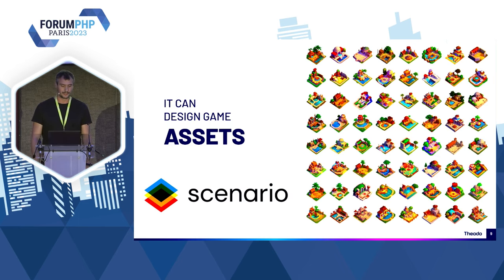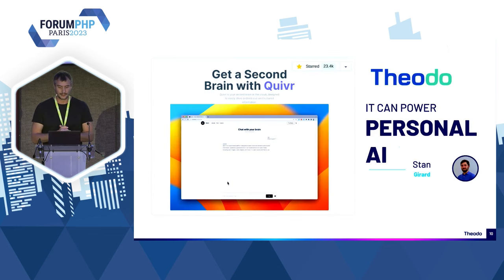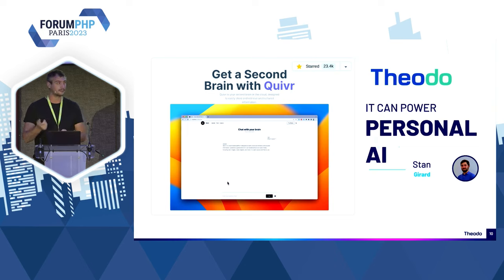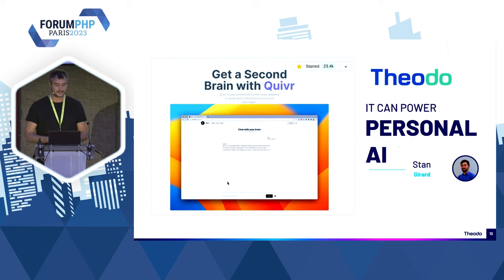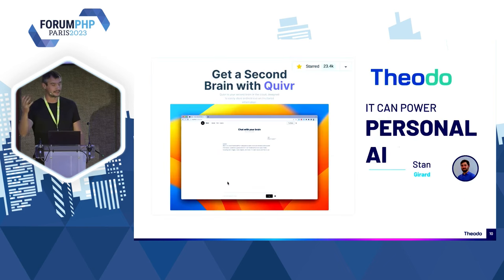Il y a aussi beaucoup de choses dans le domaine du jeu vidéo, par exemple la boîte Scenario qui génère plein de variantes d'assets en quelques minutes. Et Stahl de chez nous a réalisé un outil open source qui s'appelle Quiver, qui a été trending numéro 1 pendant quelques temps. Il permet de faire du chat-to-data : vous uploadez un PDF, vous pouvez parler à ce PDF, lui poser des questions et il vous répond. L'idée c'est que je vais vous expliquer comment on a réussi à faire ça.